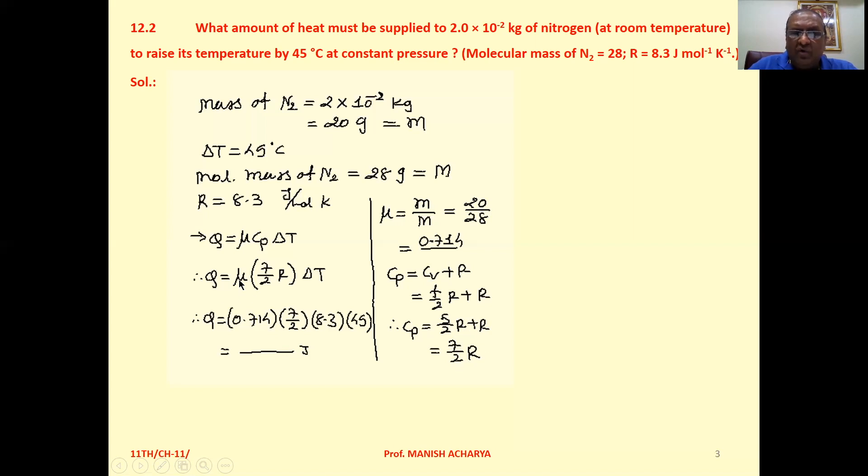So Q = μ × (7/2)R × ΔT. μ which we calculated is 0.714, times (7/2) times R, which is 8.3, times ΔT which is 45. Solve this one and you will get the amount of heat supplied.